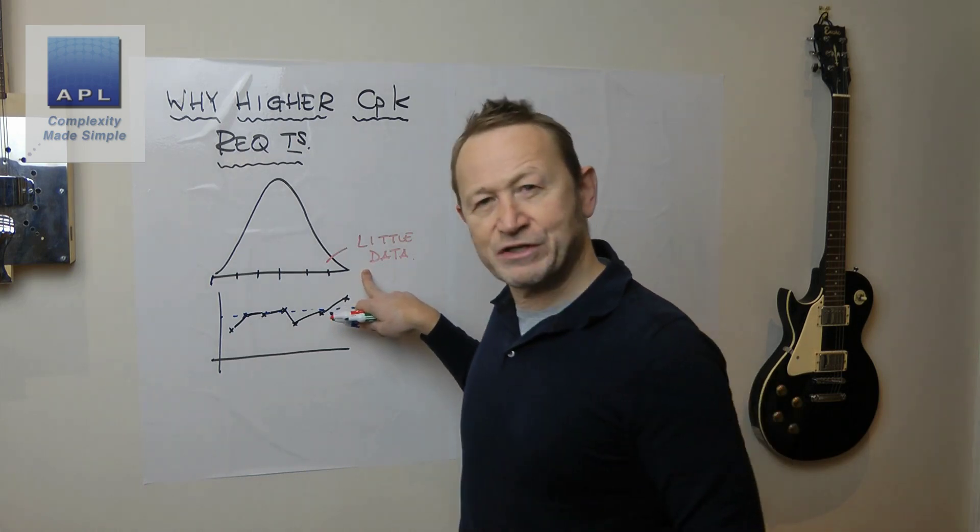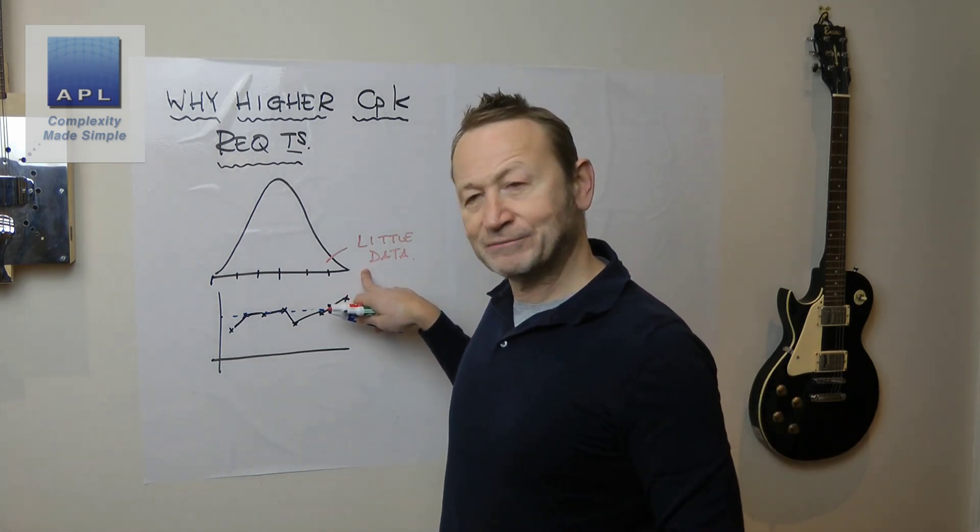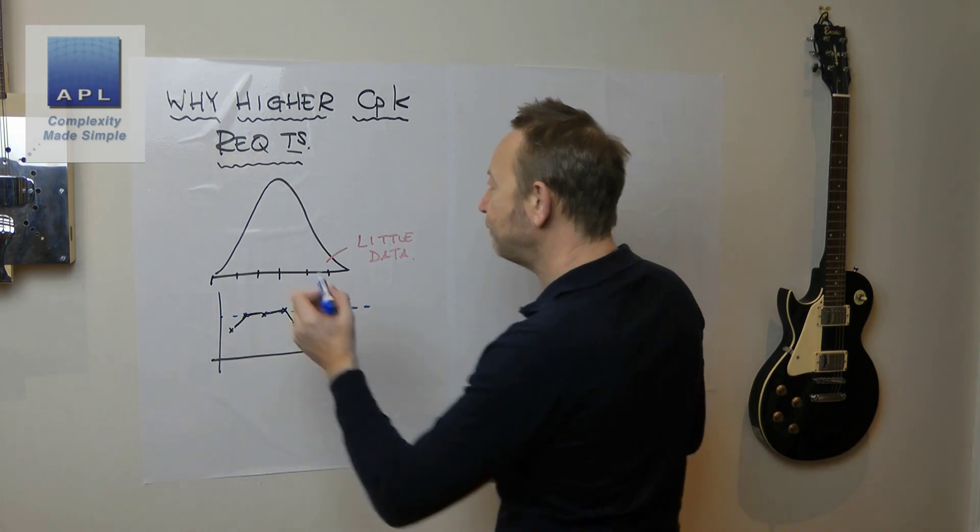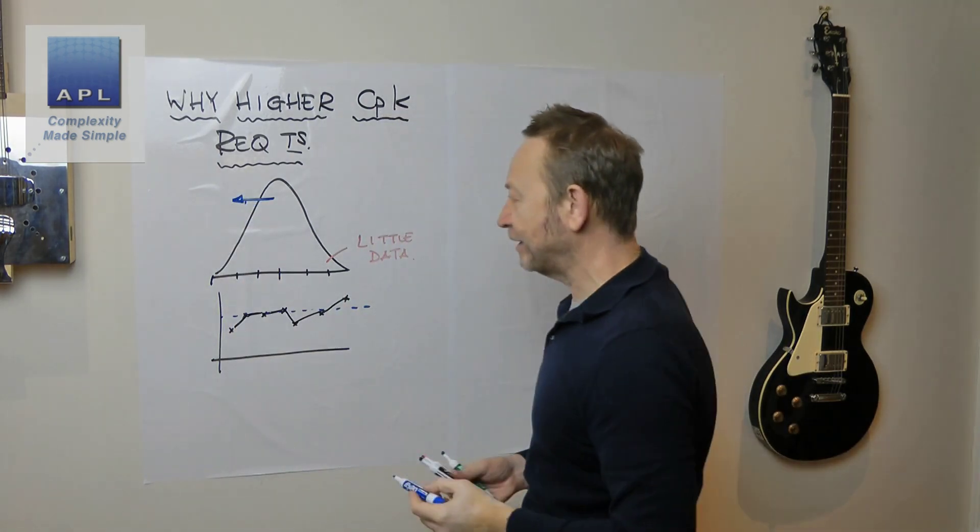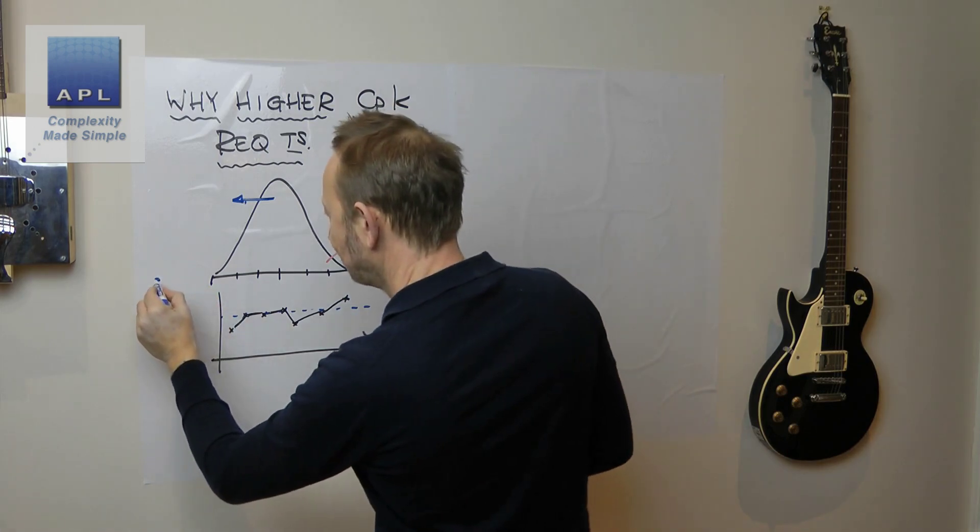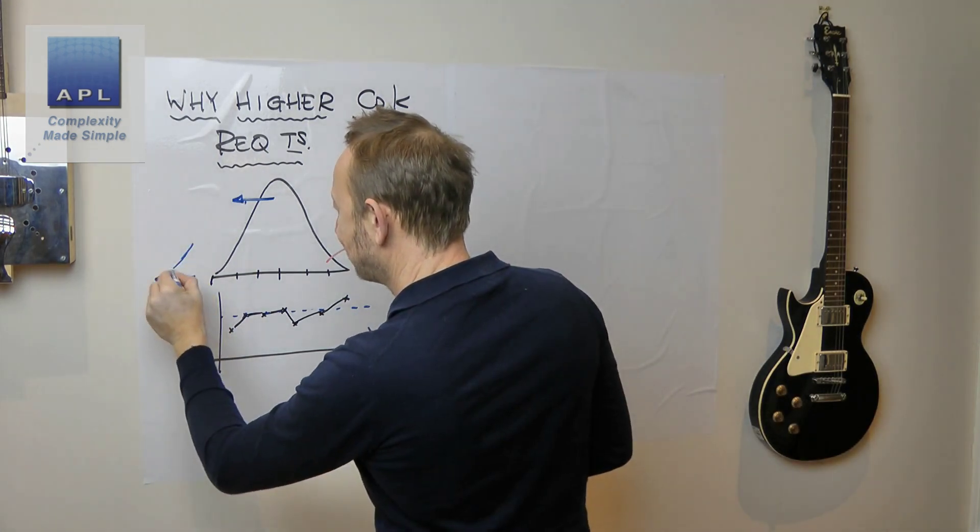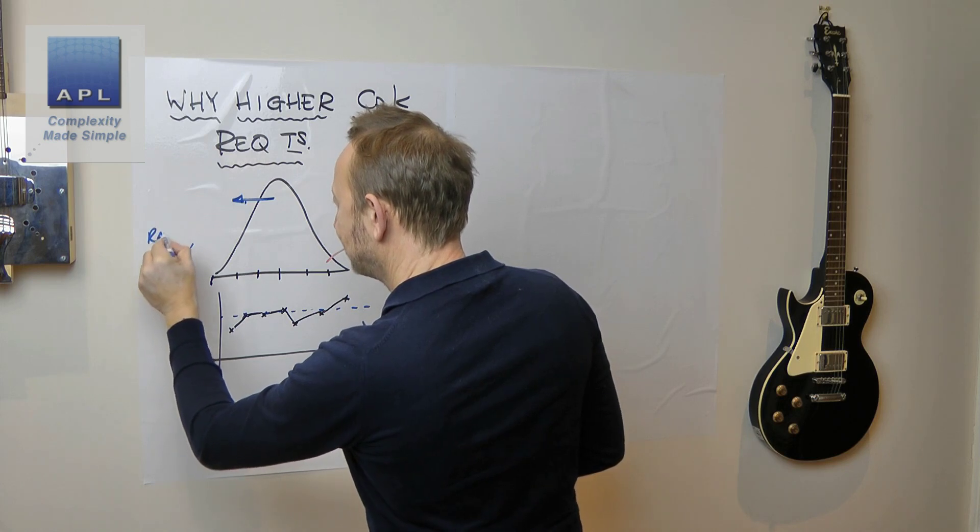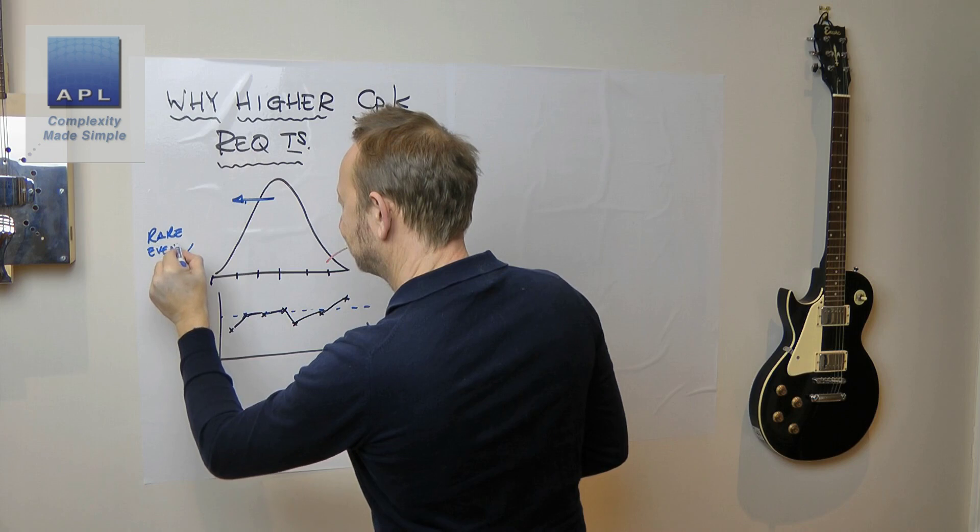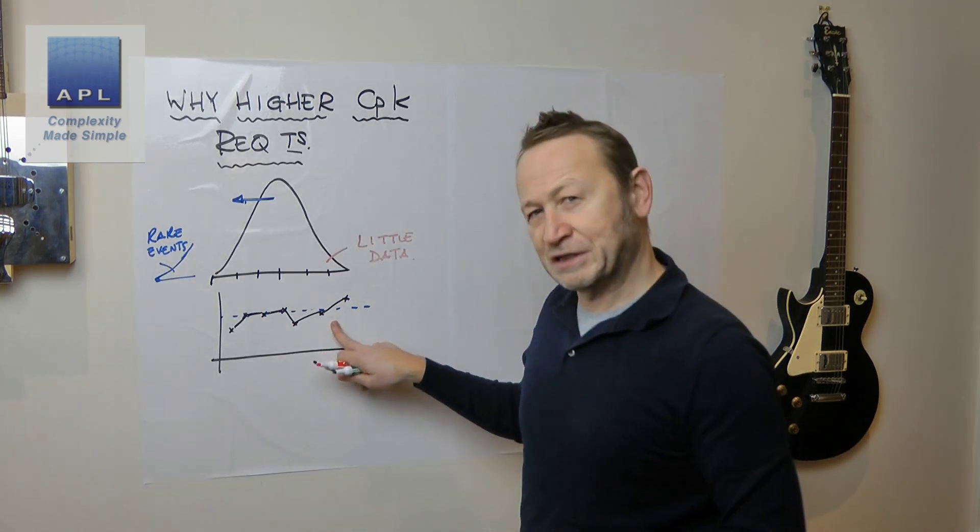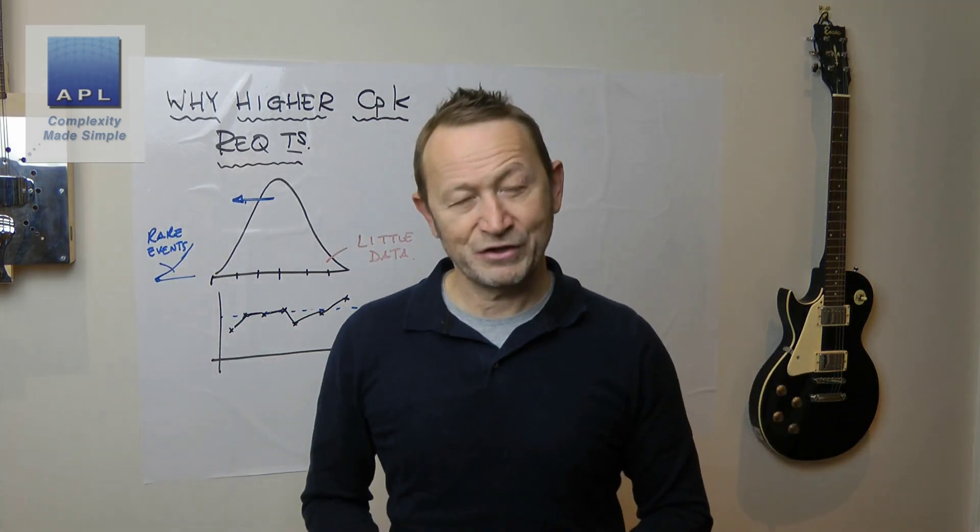Because of the rarity of the data out here, if this process moves over here, the data that's going to be in the tail, these data points are rare events.